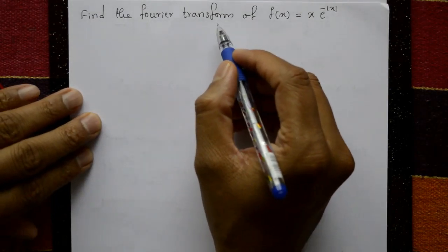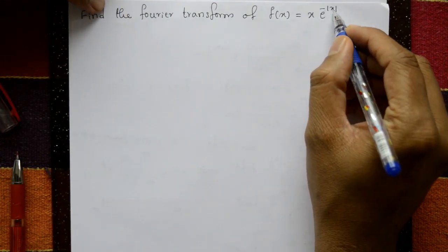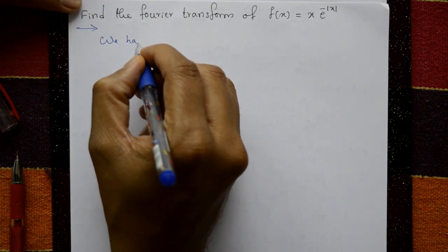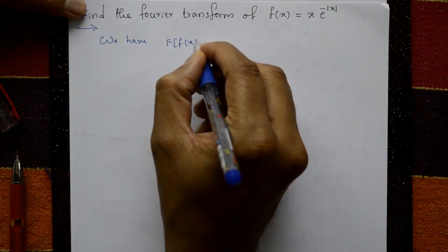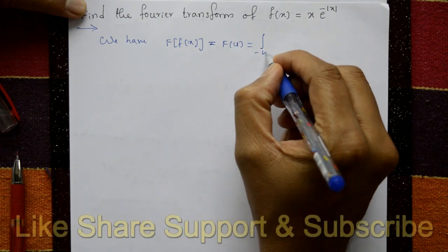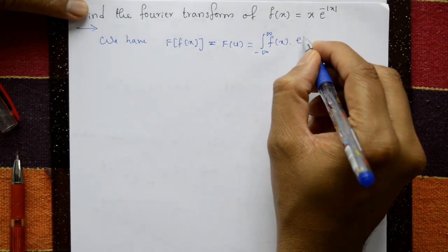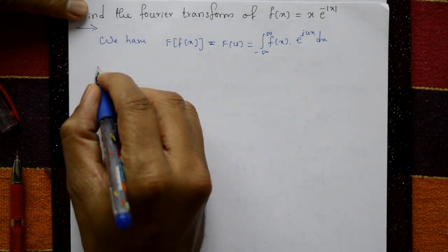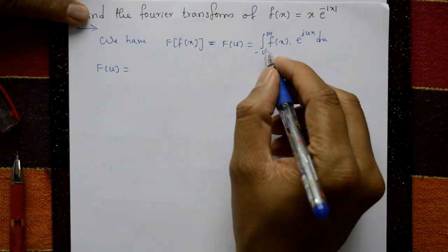Find the Fourier series of f(x) = x·e^(-|x|). Solution: F(u) is defined as the integration from minus infinity to plus infinity of f(x)·e^(iux) with respect to x.